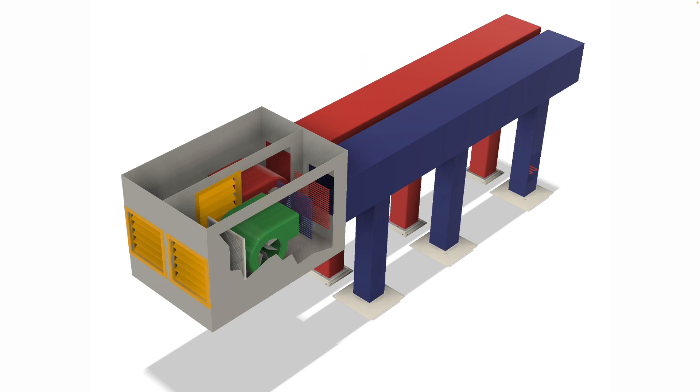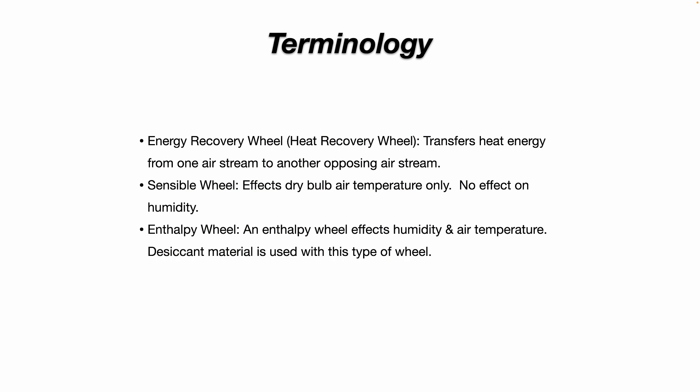There's two basic types of energy recovery wheels. The sensible wheel affects only dry bulb air temperature and has no effect on humidity, whereas an enthalpy wheel affects humidity and air temperature. A desiccant material is used with this type of wheel.